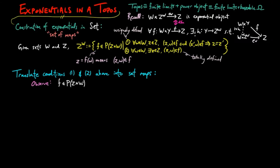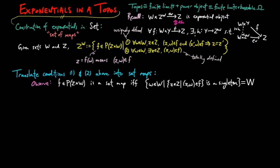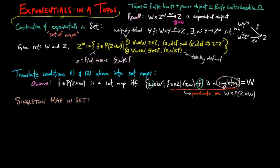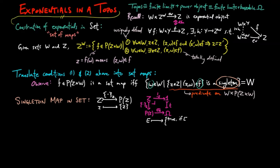Observe that f is a set map if and only if the subset of W consisting of elements w such that the set of elements z in Z with z w in f is a singleton set, equals W. We need to first address how to predicate the condition of being a singleton set. In the category of sets the singleton map sends an element z to the singleton set containing z. This is clearly an injection, characterized by a map sigma sub z from the power set of z to the sub-object classifier, which assigns a subset e of z to true if e is a singleton set, and to false otherwise.